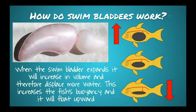How do swim bladders work? If you wonder how fish go up and down, fish have swim bladders that look like an oddly shaped balloon. When the swim bladder expands, it fills with air, increases in volume, and displaces more water, increasing the fish's buoyancy and allowing it to float upward. When it deflates, the fish can submerge further. Fancy goldfish can sometimes get swim bladder disease from dirty water, causing the fish to float up.